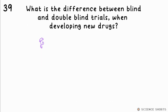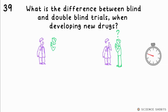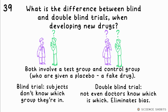Question 39. What is the difference between blind and double blind trials when developing drugs? A blind trial involves a test group who are given the drug and a control group who are given a placebo. The test subjects don't know which group they're in, but the scientists or doctors carrying out the test do. For a double blind trial, not even the doctors know which is which. This eliminates any bias.